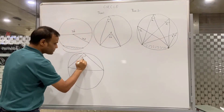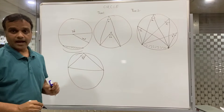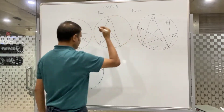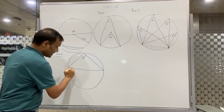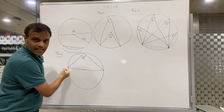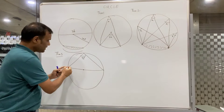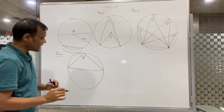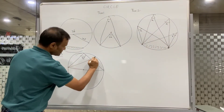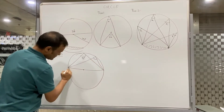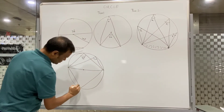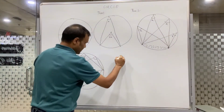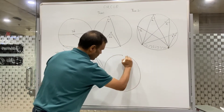Theorem number three is the easiest one to understand. The diameter is a line passing through the center. If it makes an angle on the semicircle, that angle is always 90 degrees. So every angle subtended by the diameter on the semicircle is 90 degrees. This is theorem number three.